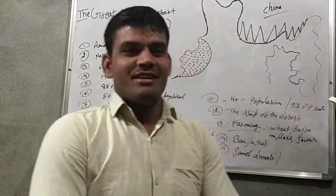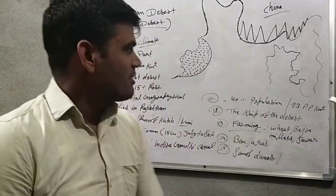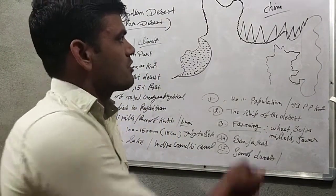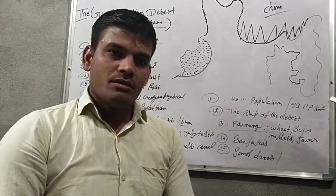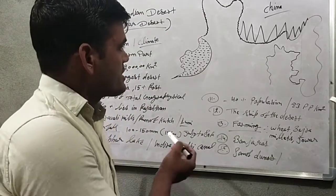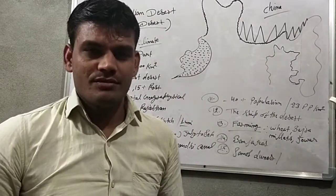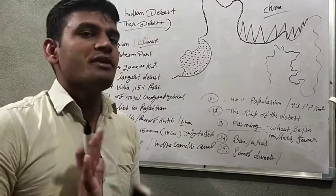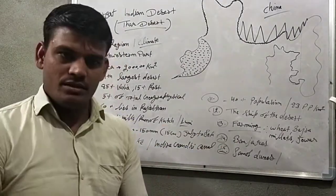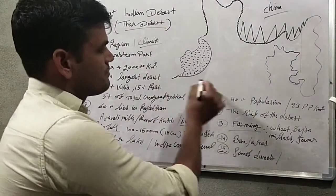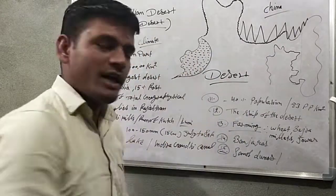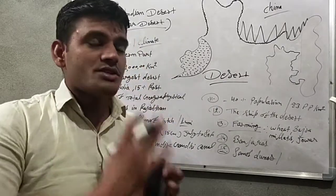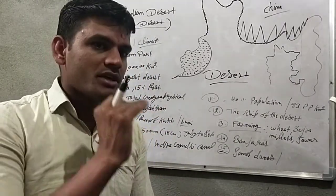Good morning students. In today's lecture we will discuss about the Great Indian Desert. In the previous topic we discussed about mountains and the plain area, but this is the third lecture where we are discussing about the Indian desert. We will complete the whole desert area in 15 points. A desert is an area receiving less than 25 centimeters of rainfall.